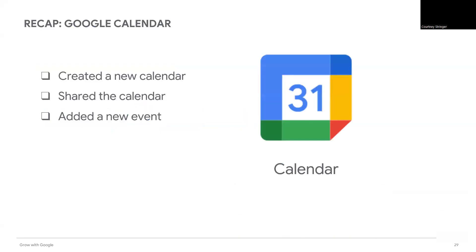We're almost out of time for today, but I hope you're feeling more comfortable with calendar and Gmail. In this short period of time, you have created a new calendar, shared the calendar, and added a new event. Other types of events you could schedule include club activities, doctor's appointments, weekend events, vacations, etc.